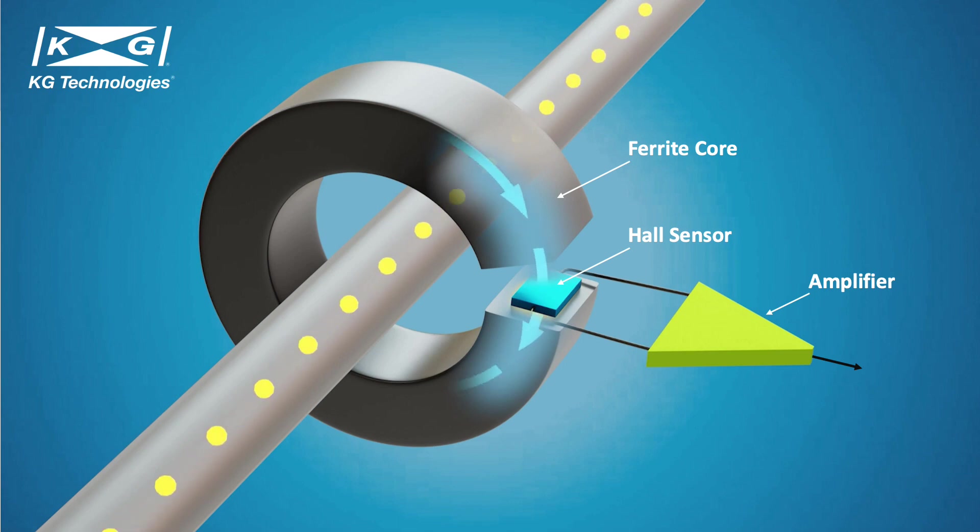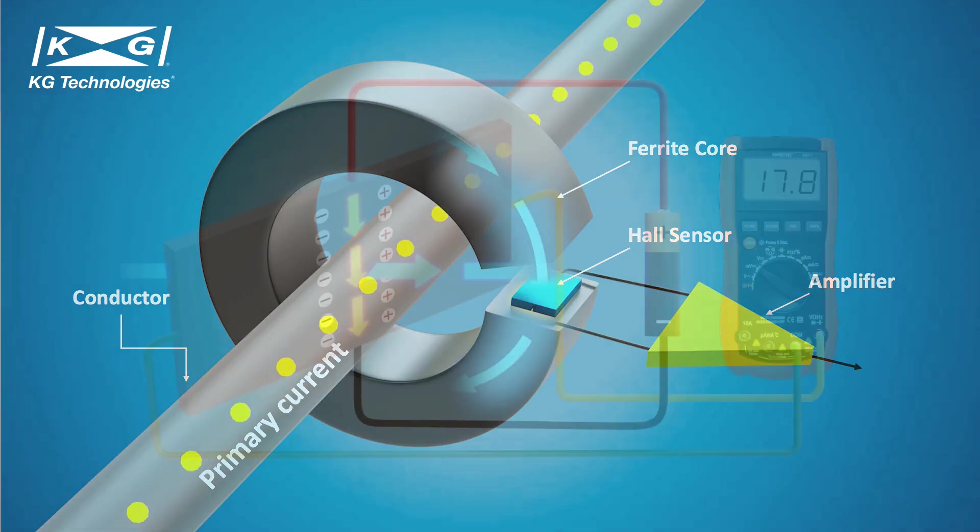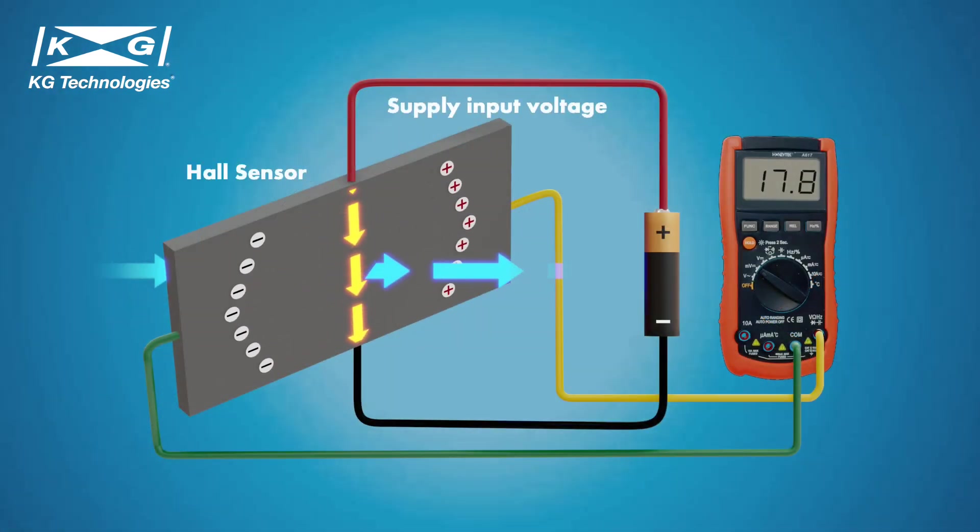The ferrite core concentrates the magnetic field around the current carrying conductor. This magnetic field depends on the current flowing through the conductor. The Hall Sensor is given an auxiliary supply input voltage to facilitate its operation. When the Hall Sensor is exposed to magnetic field from the core, the Lorentz force will push electrons to the side of the sensor.